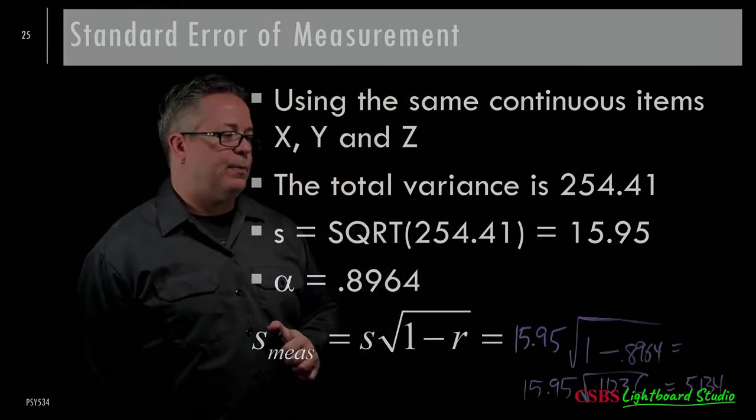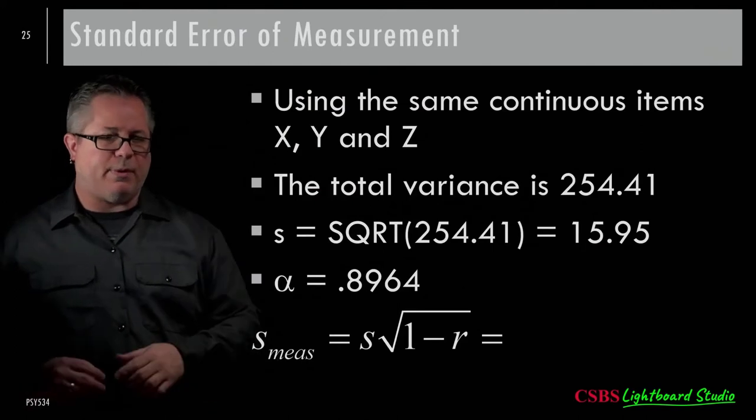In measurement theory, we talk about factor analysis — exploratory and confirmatory — and we're really interested in how well items go together and what the loadings are for each item. We use a theoretical approach to examine how much a factor is driving responses. But when we look only at how much each item relates to the factor, we're missing a piece.